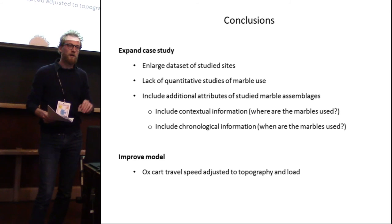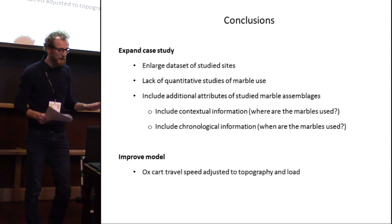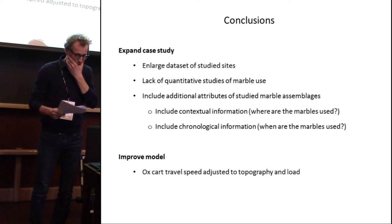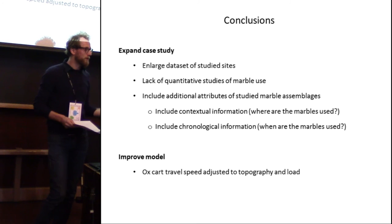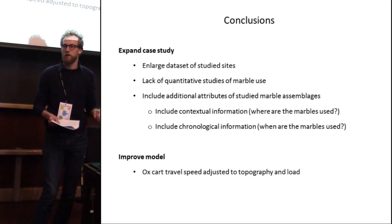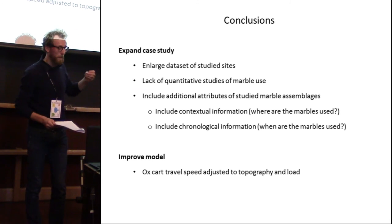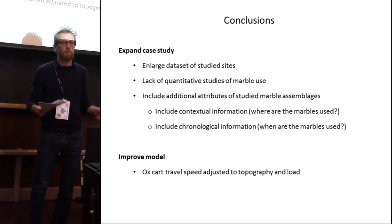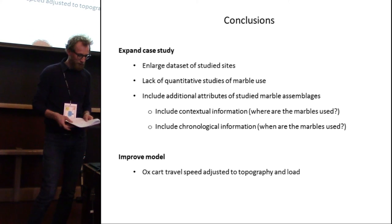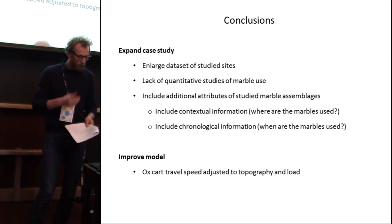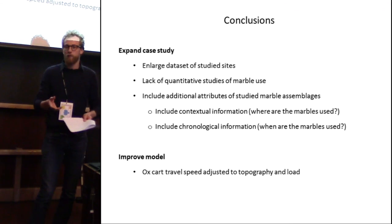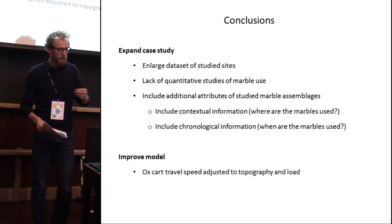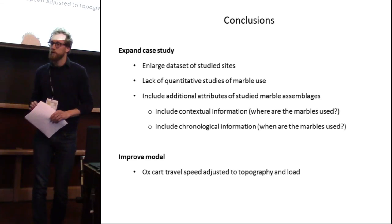So what I'll be doing this summer is going back to the study area, studying more sites, and doing quantitative studies for all sites to build a larger dataset. Another step would be to include contextual information — for example, what type of structure we are looking at: private or public — which could give us more information about how goods are transported. Finally, we would also like to improve our model to incorporate travel speed more dynamically, adapting it to both topography and the load being transported. Thank you.